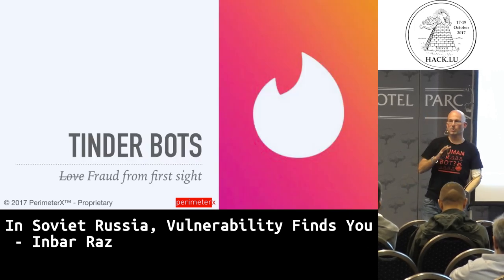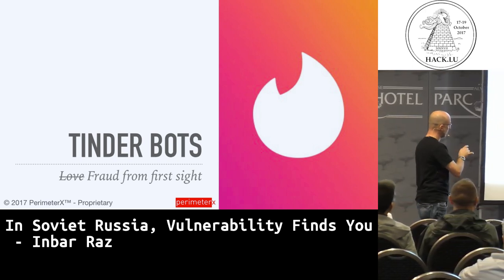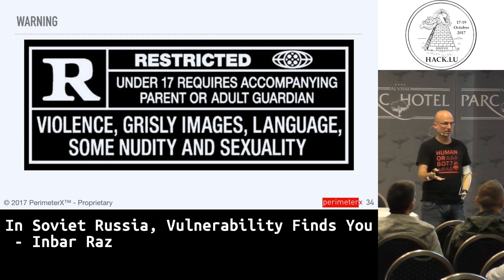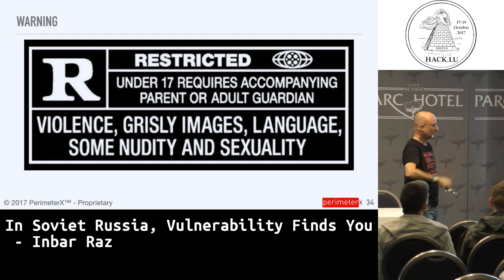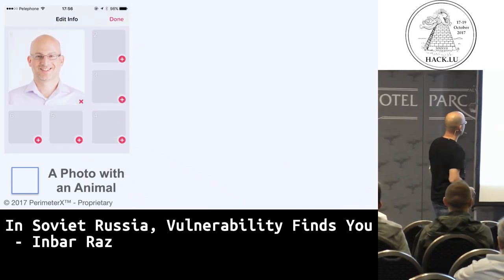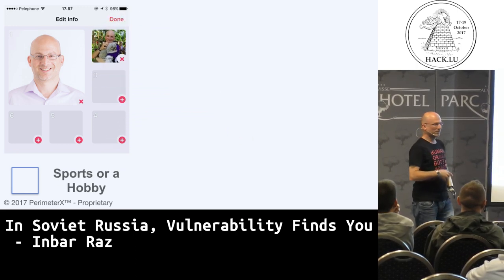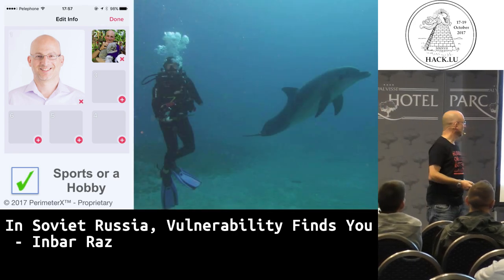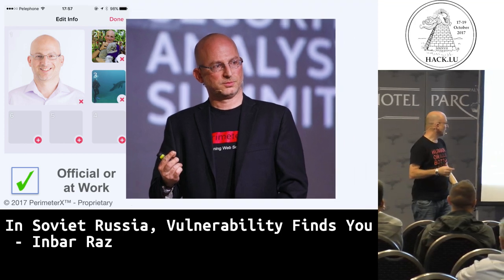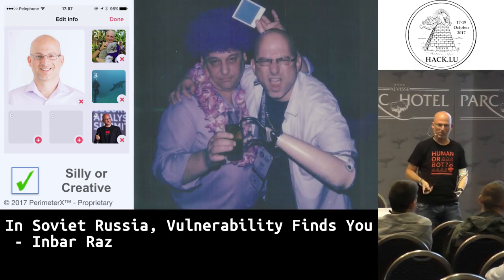It's important to see how this requires no particular special skills to create a huge amount of damage. Now we have two more examples. This one is not so much a vulnerability but detecting somebody else's bad work. I travel a lot. I'm single, so I use Tinder. Tinder is about meeting people. You need to build a profile: a professional profile photo, a photo with an animal to show compassion, something of you doing sports or a hobby, something official or at work, and something silly or creative. So now I have a profile and I start traveling.